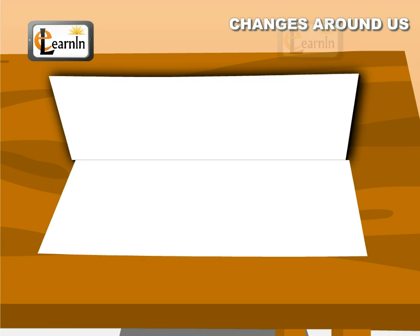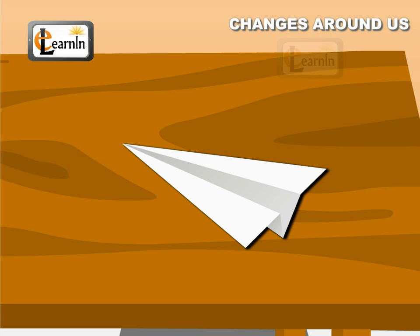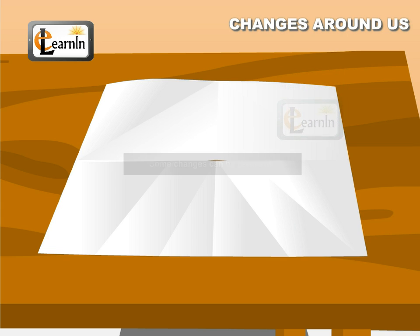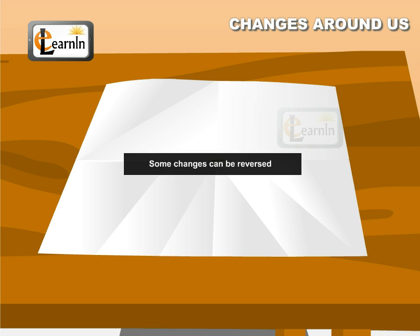Take a paper and fold it to make a paper plane. After some time, unfold the paper plane and the paper gets back to its previous shape. This shows that some changes can be reversed.